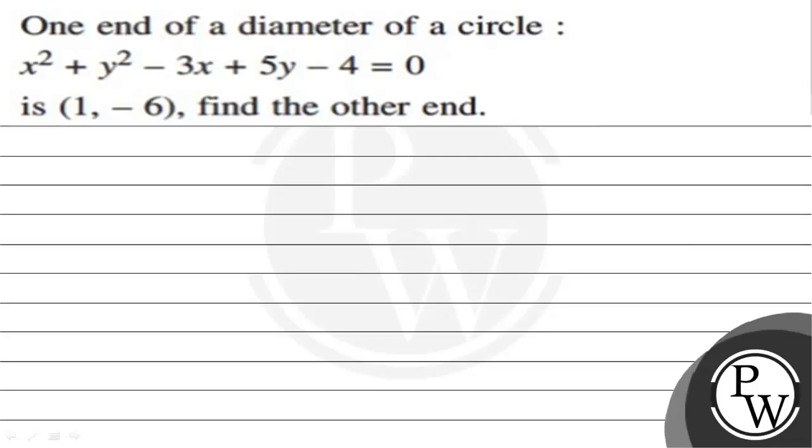Hello, let's read the given question. The question states that one end of the diameter of a circle x² + y² - 3x + 5y - 4 = 0 is (1, -6). Find the other end.